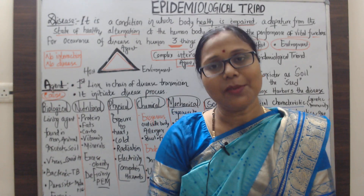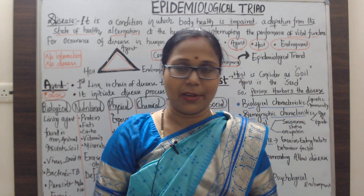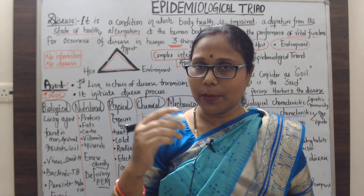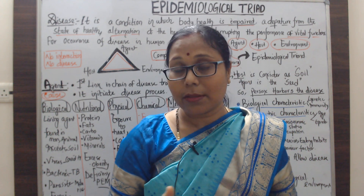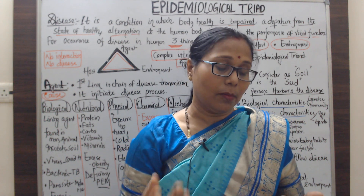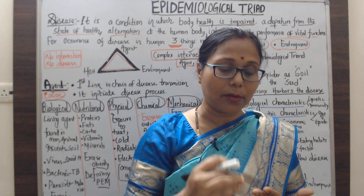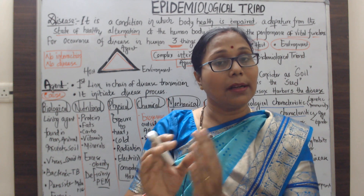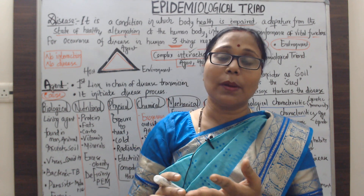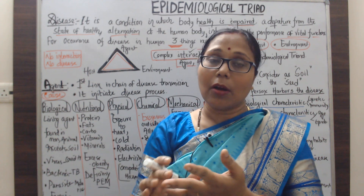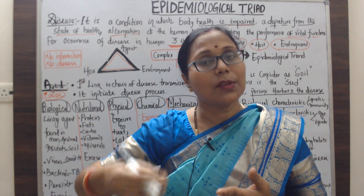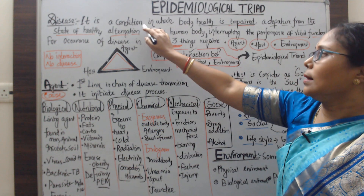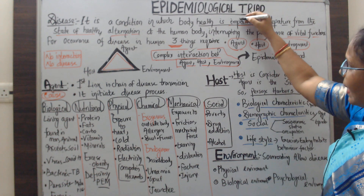Hello everyone. Today in this lecture we discuss the epidemiological triad, which is an important topic. First, let us look at the concept of disease. A person is called diseased or unhealthy when their health condition is impaired — a departure from the state of health — or an alteration in the performance of vital functions.